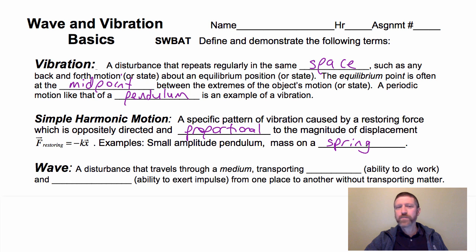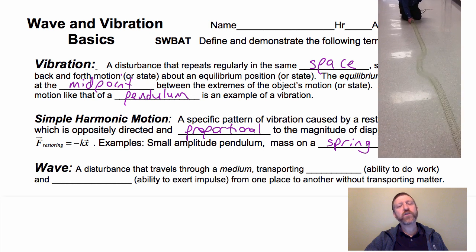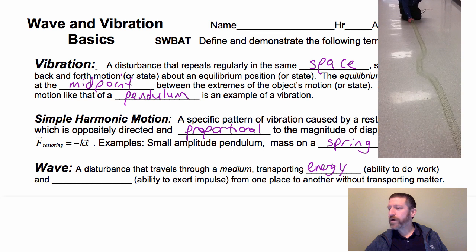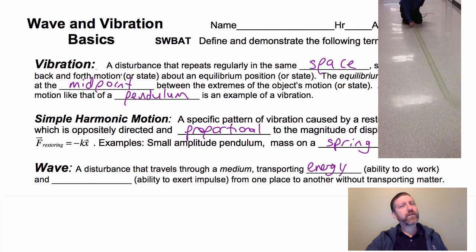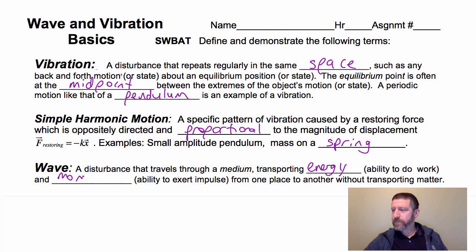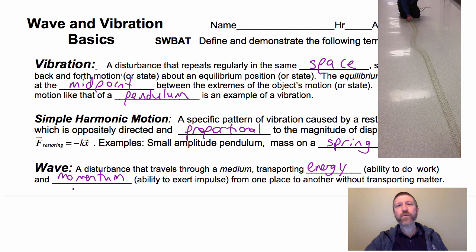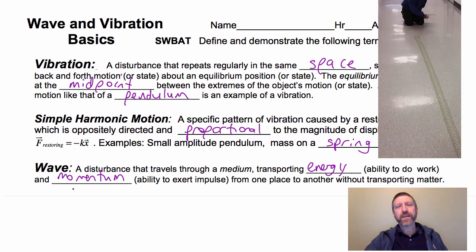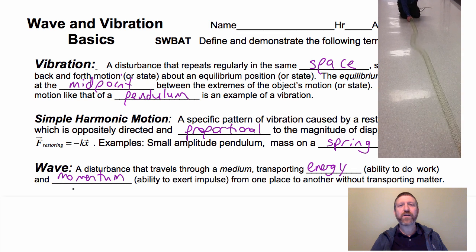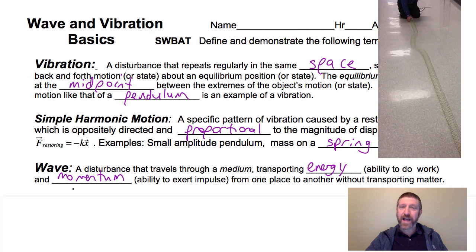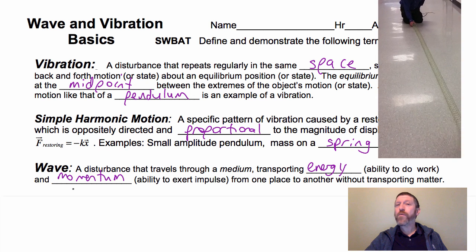A wave, which is always caused by some kind of vibration, is a disturbance that travels through a medium, transporting energy — which is the ability to do work — and momentum, which is the ability to exert impulse. So a wave will always transmit energy and momentum, but it doesn't transport matter. When you have a wave moving from one place to another, there are no molecules of air actually traveling from here to the microphone. What's happening is there is a disturbance that is traveling, but no molecules of air.